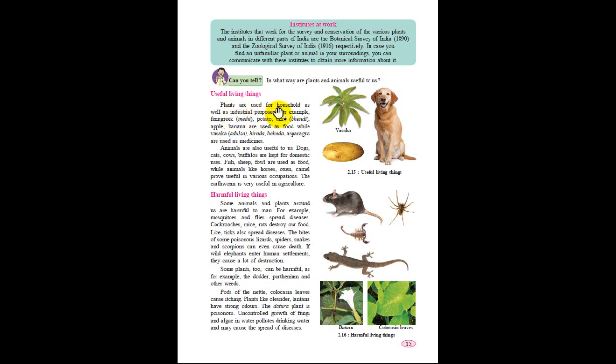Useful living things. Plants are used for household as well as industrial purposes. For example, fenugreek, methi, potato, okra, bindi, apple, banana are used as food, while vasaka (Adhatoda vasica), hirada, beharada, asparagus are used in medicines. These are herbs used as medicine, while lots of plant parts are used for furniture also.